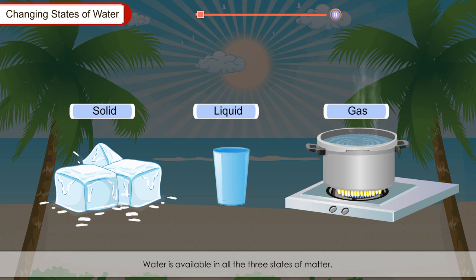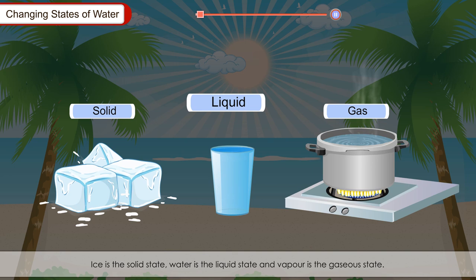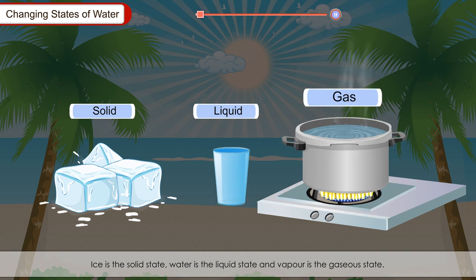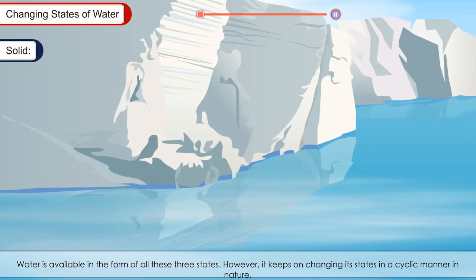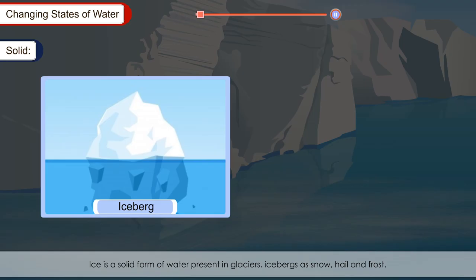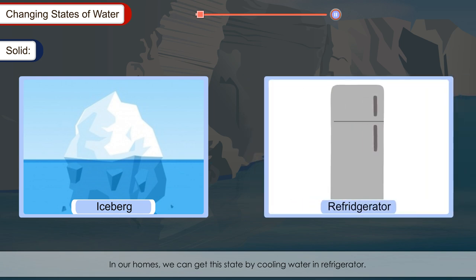Changing states of water. Water is available in all three states of matter. Ice is the solid state, water is the liquid state, and vapour is the gaseous state. Water keeps changing its state in a cyclic manner in nature. Ice is the solid form of water, present in glaciers, icebergs, snow, hail and frost. In our homes, we can get this state by cooling water in a refrigerator.